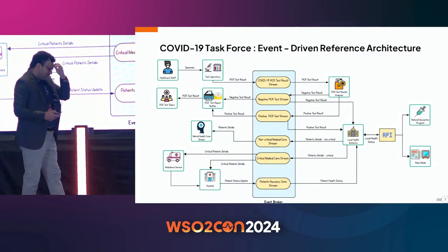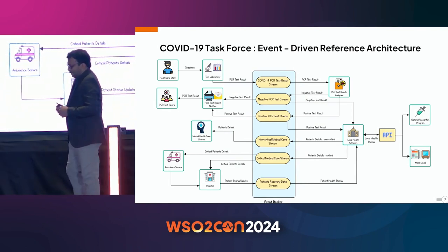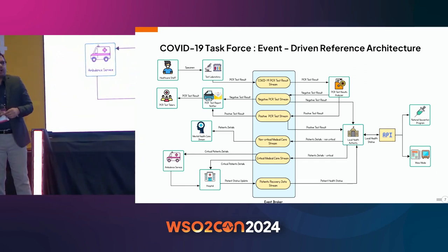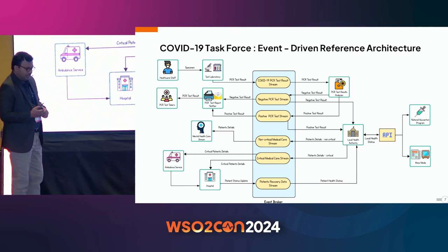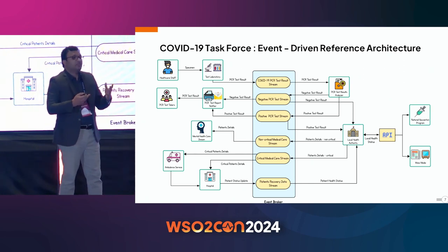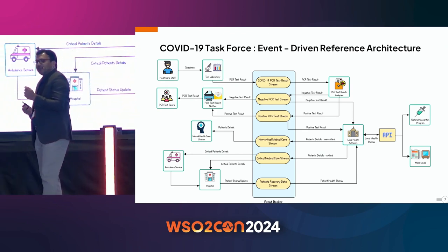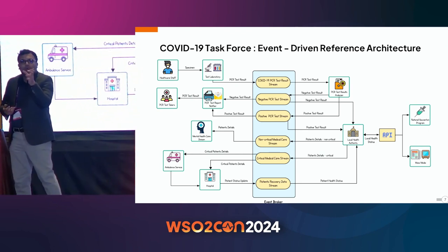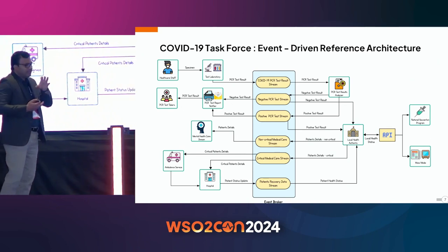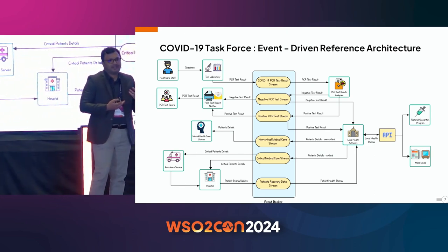Another use case: many of us faced the COVID-19 pandemic situation. At that time, public entities, government entities, and many organizations faced an important problem sharing data between different interested parties. In that situation, the event or data became the most important character. For such use cases, event-driven would be the natural option, and you can get the advantage of it.